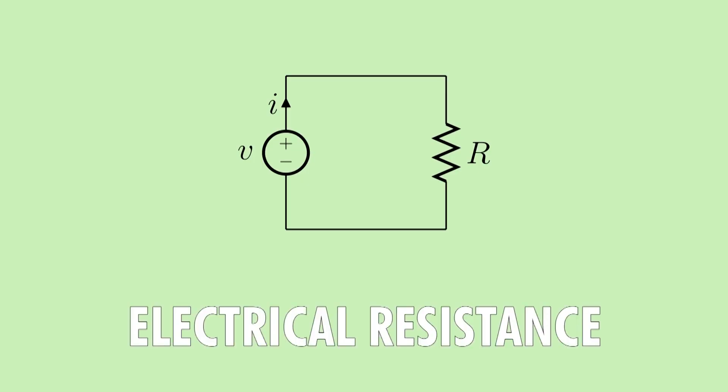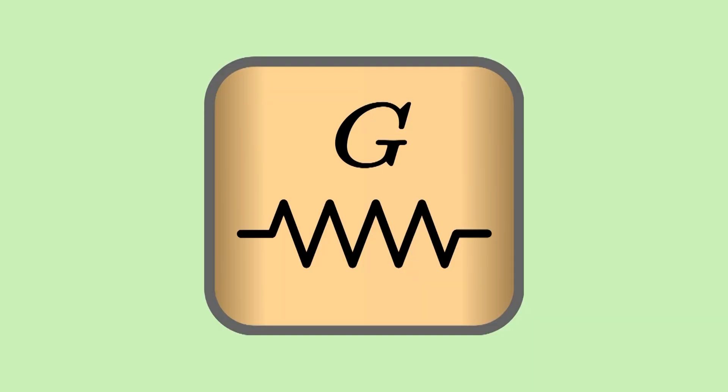First, electrical resistance, represented by R, measures the object's opposition to electricity flow. Electrical conductivity, measured by G, is its reciprocal quality, measuring the ease with which a current can travel through it. Typically, if you want to find an object's level of resistance: R equals 1 divided by G.